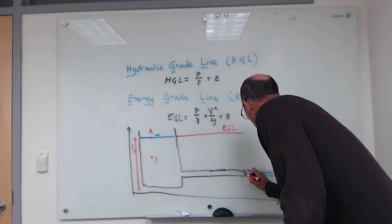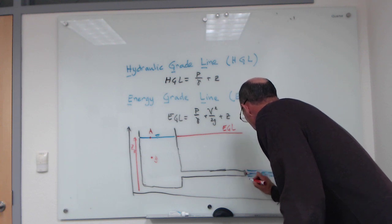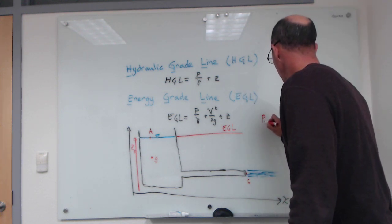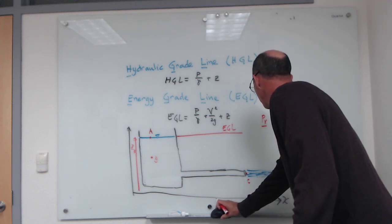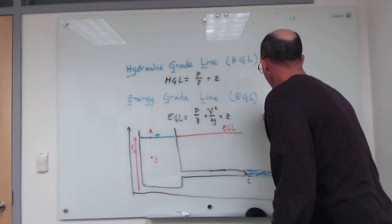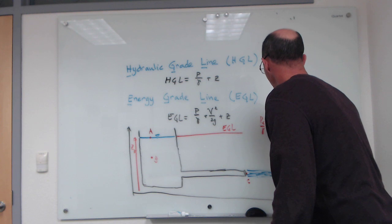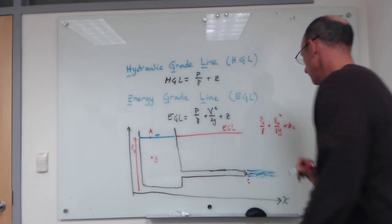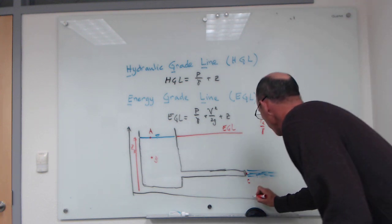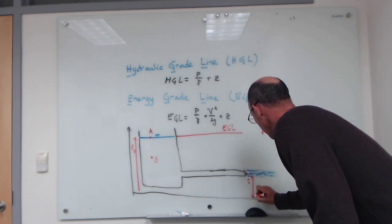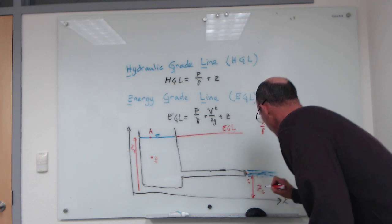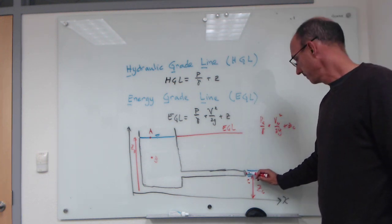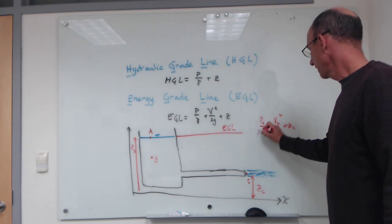Now when we exit the system, we're down here at this point, which I'll call point C. You can think of point C as having a p over gamma plus a v_C squared over 2g plus an elevation at C. The elevation at C is represented by this height, and we're in a free jet at this location, so that means the pressure is zero.